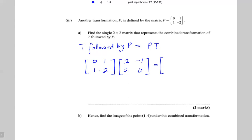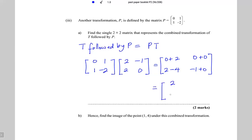Multiplying P times T: top row, left column — zero times two plus one times two equals two. Top row, right column — zero times minus one plus one times zero equals zero. Bottom row, left column — one times two plus minus two times two equals minus two. Bottom row, right column — one times minus one plus minus two times zero equals minus one.